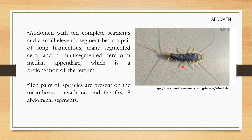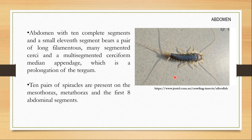Ten pairs of spiracles are present on the mesothorax, metathorax, and the first 8 abdominal segments. As evolution happened in insects, they lost spiracles, so more complex insects have fewer. Since order Zygentoma includes primitive insects, they have 10 pairs of spiracles: 1 pair on the mesothorax, 1 pair on the metathorax, and 8 pairs on the abdominal segments, located on the lateral sides.